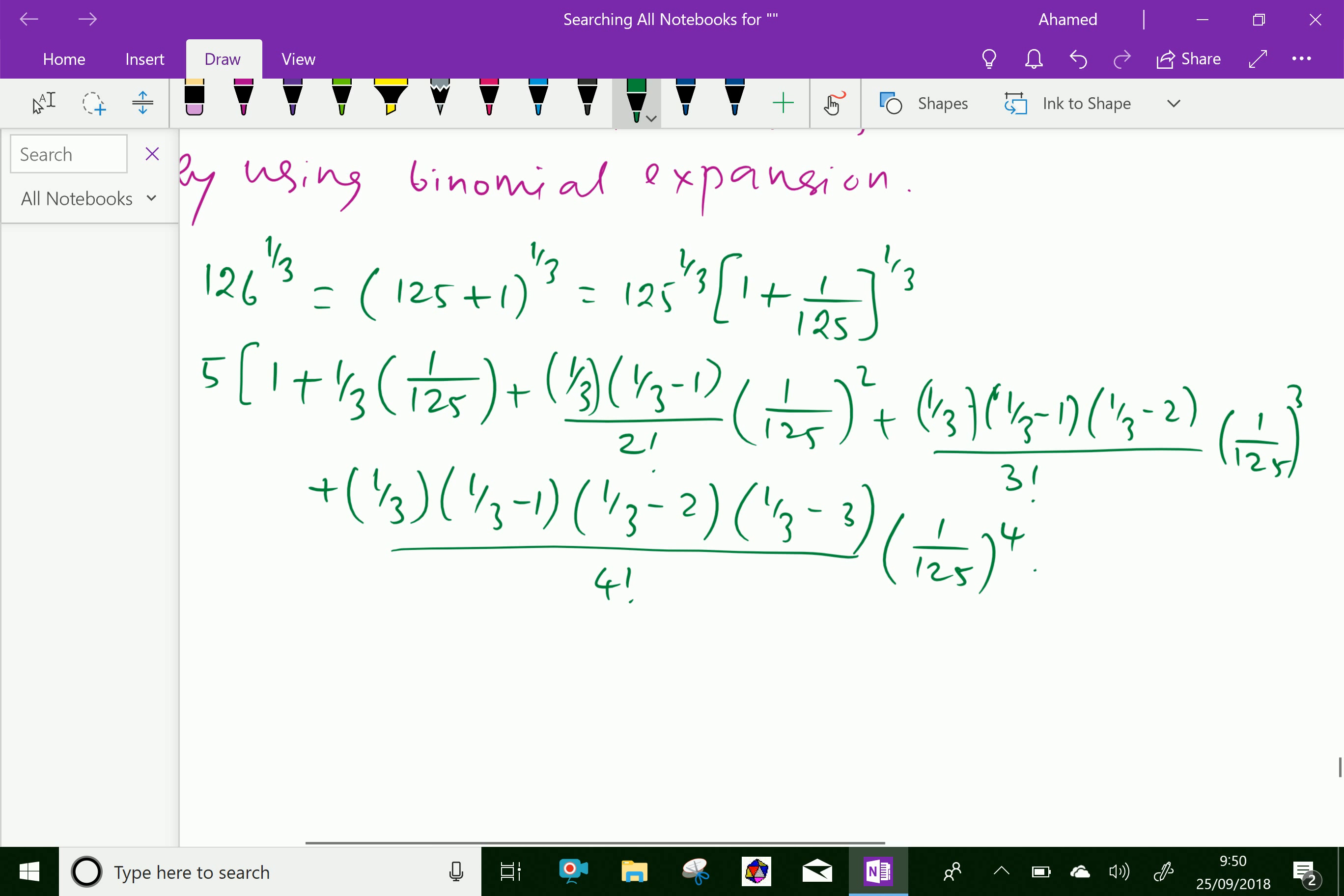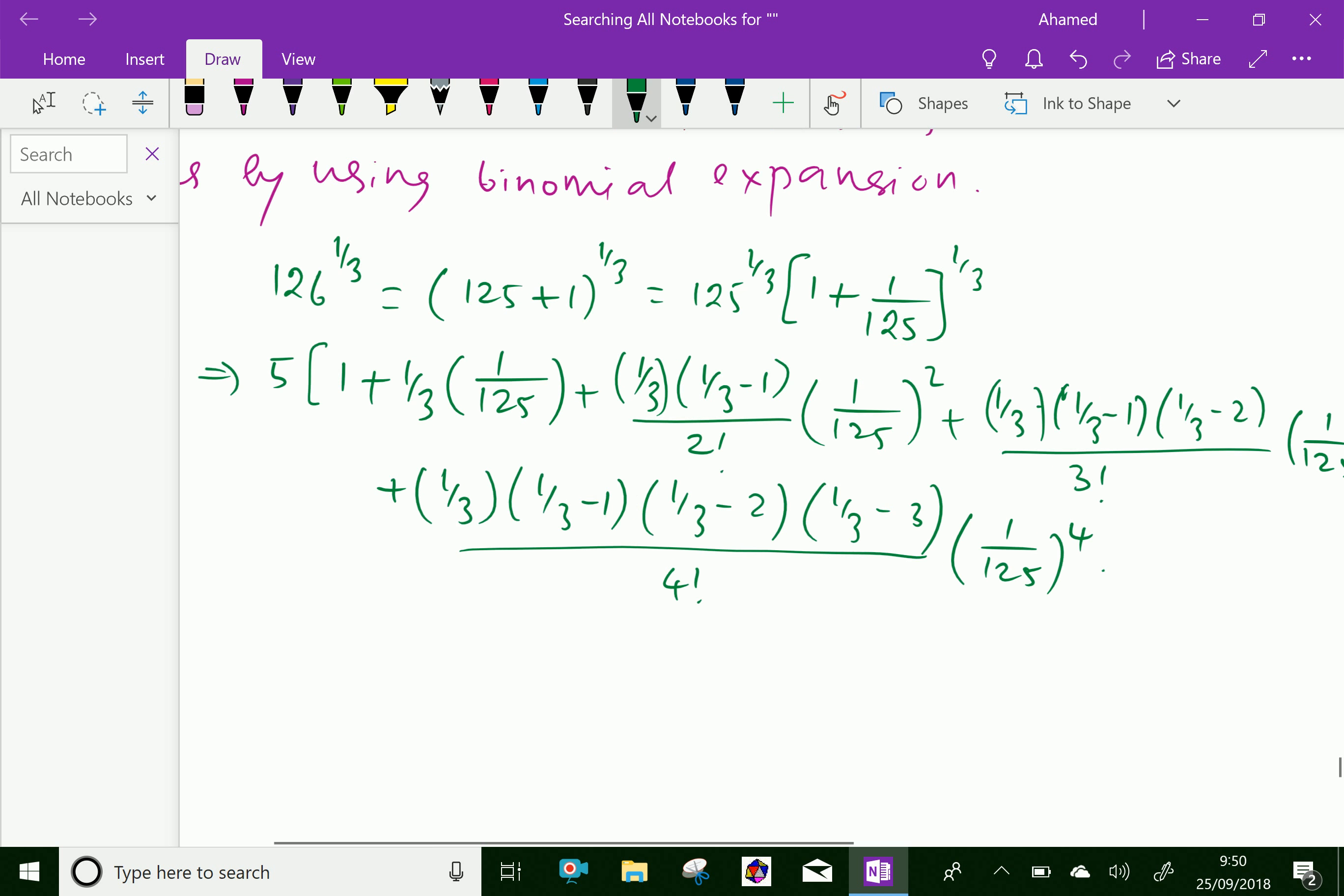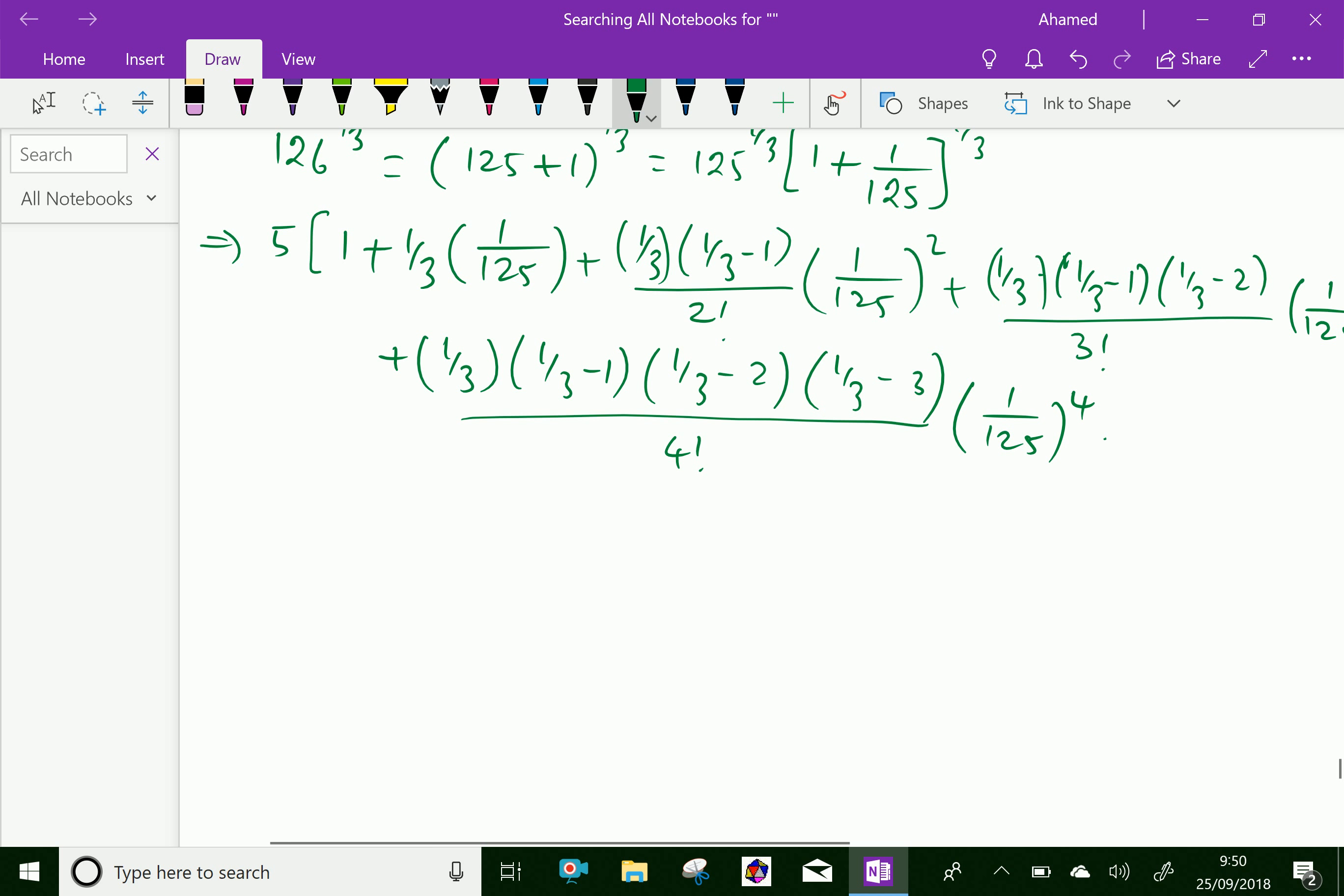Now, let us simplify these terms. This becomes 5 times [1 + 1/3 times 1/125 plus (1/3)(-2/3) over 2 factorial times 1/125 squared].